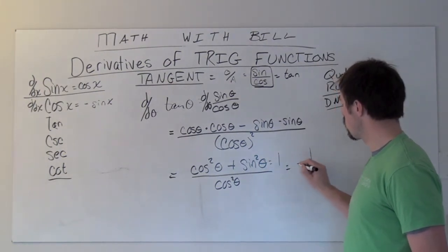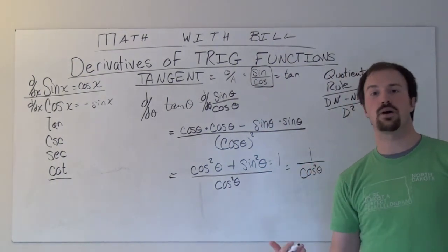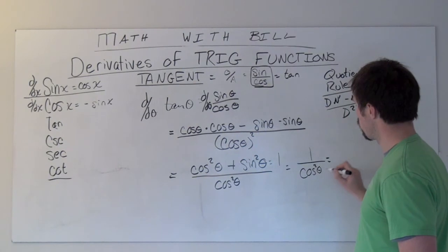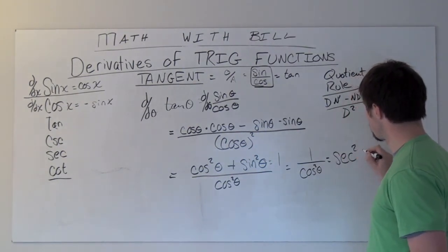So simplifying again, we now have one over cosine squared theta. And one divided by cosine is secant. And so one divided by cosine squared is secant squared theta.